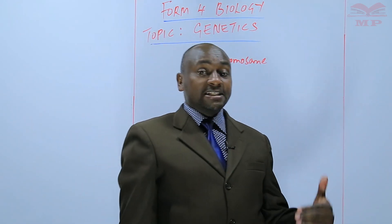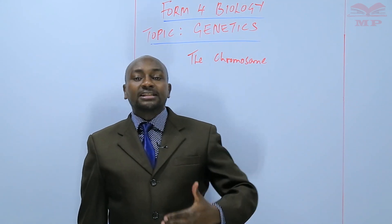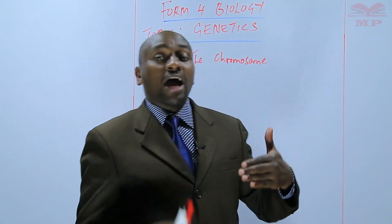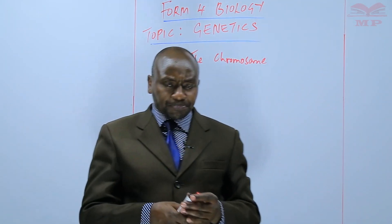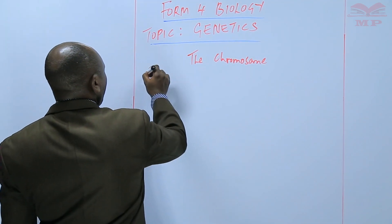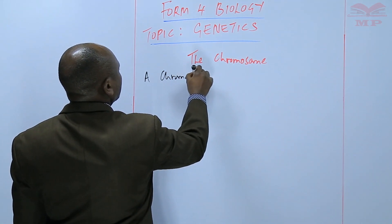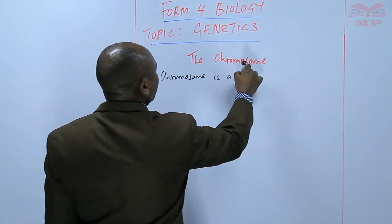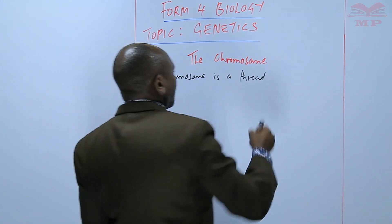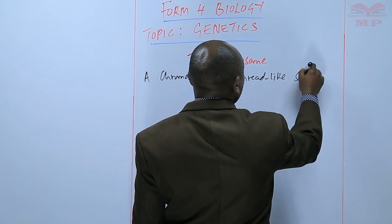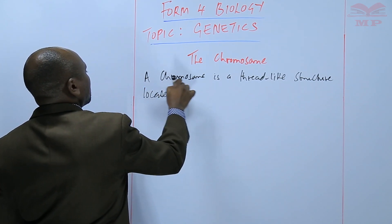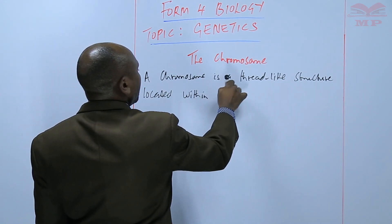This genetic material is the one that determines the characteristics that we have and the characteristics of our generations to come. A chromosome is a thread-like structure — it looks like a thread, it's a long thing — located within the nucleus of a cell.